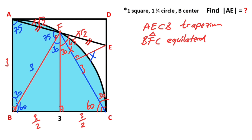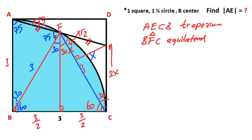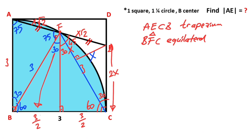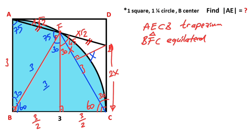If you focus on this triangle: if there is an x unit opposite the side of 30 degrees, the side opposite 90 degrees must equal 2x. Now if you focus on this triangle: if there is a 3 over 2 opposite the side of 30 degrees, the side opposite 60 degrees must equal 3 over 2 times root 3.